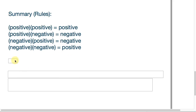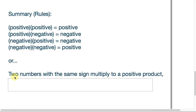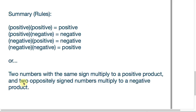There's another way to phrase this that may help some people remember. Two numbers with the same sign multiply to a positive product — so a positive times a positive and a negative times a negative both result in a positive product. However, if you multiply two oppositely signed numbers, they multiply to a negative product. So a negative times a positive and a positive times a negative — in both cases you have opposite signs, and the product will be negative.